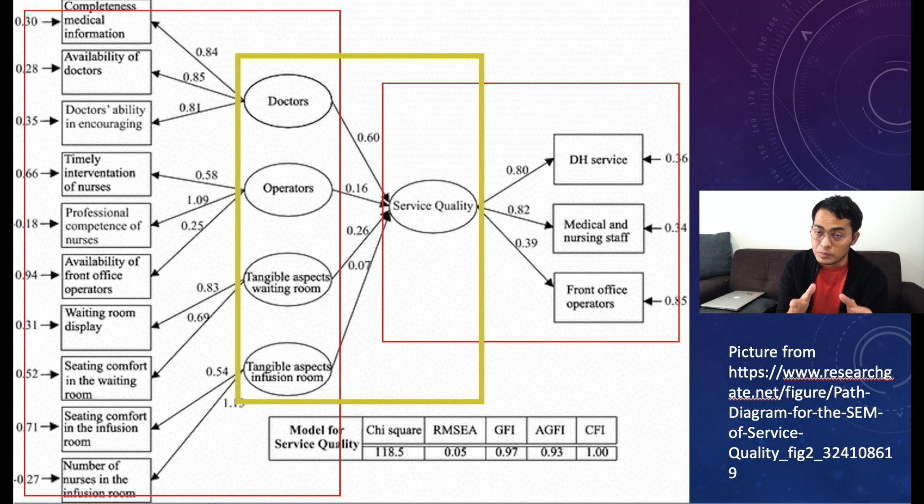The right one, surface quality is a latent variable and the indicators are hazard services, medical nursing staff, front office operators - these are indicators of the surface quality. This is another measurement model from dependent variables.